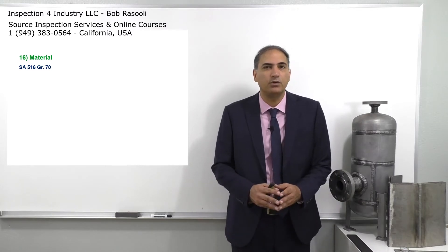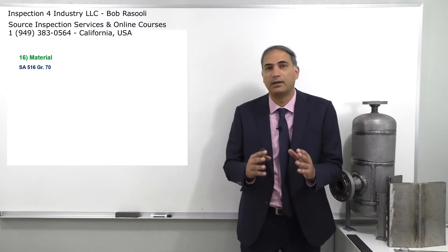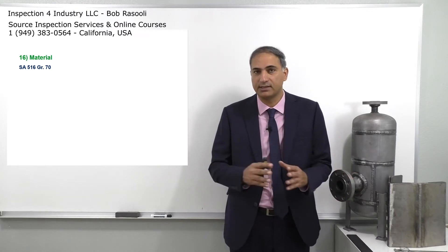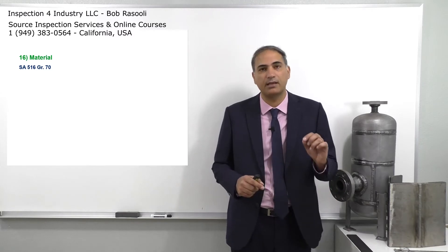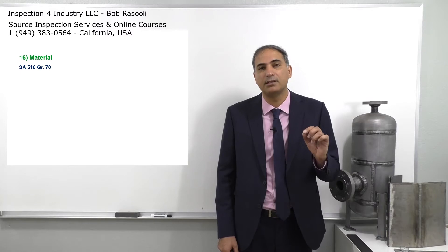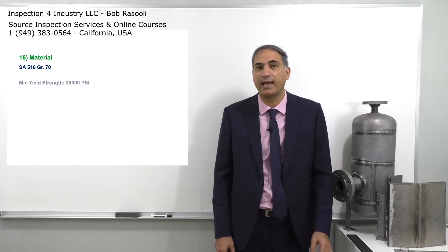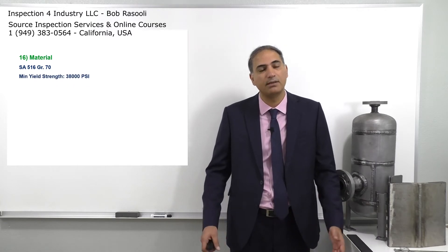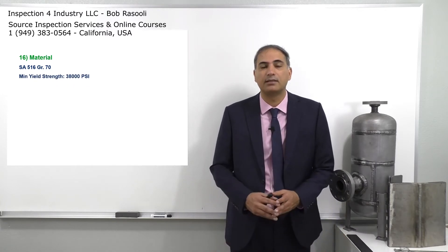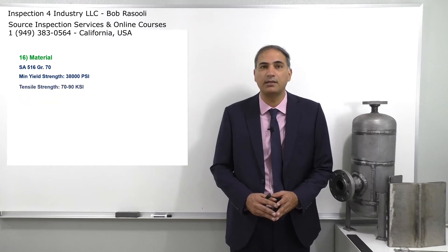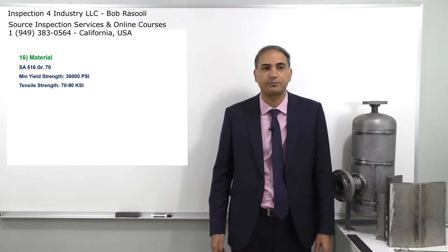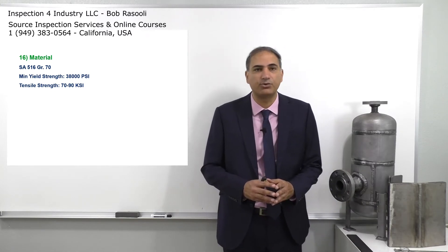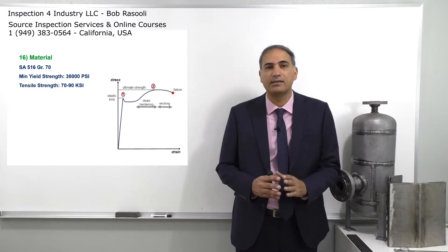If you open ASME Section 2, which covers materials, there is a certain table where you can find SA516 Grade 70. That table indicates the minimum yield strength is 38,000 psi. We're going to understand what that means. The tensile strength is 70,000 to 90,000 psi. You can see a curve on the screen where the vertical axis is stress and the horizontal axis is strain.